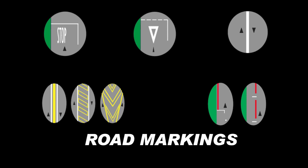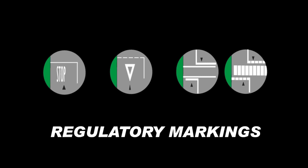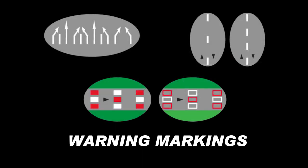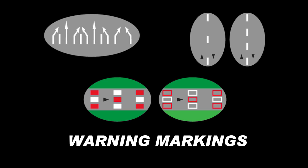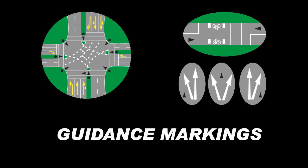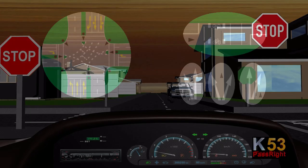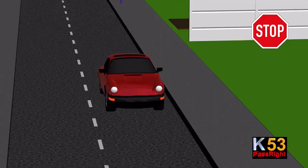Road markings are lines, arrows, words, or letters painted on the road surface in white, yellow, or red. They are divided into three categories: regulatory markings, which regulate the flow or movement of traffic; warning markings, which warn you of changes in road conditions ahead; and guidance markings, which give the driver useful information on the roadway. Some road markings are accompanied by road signs.